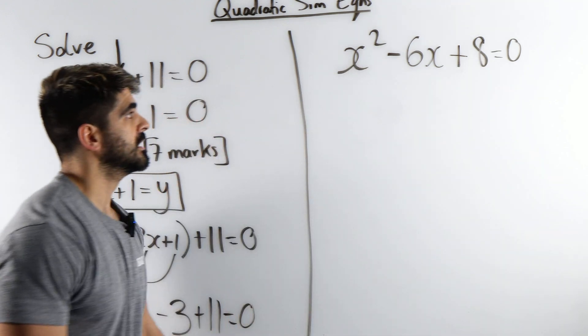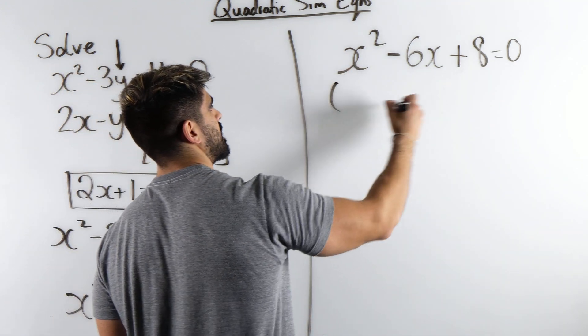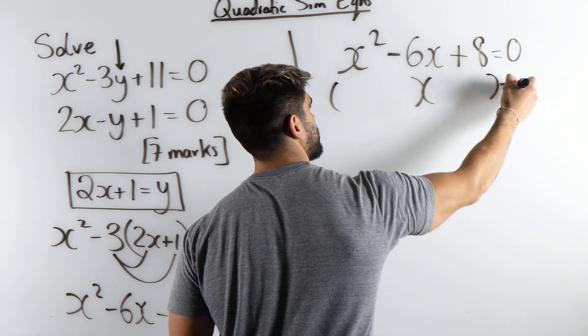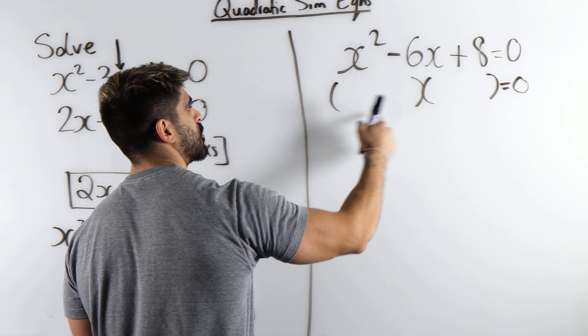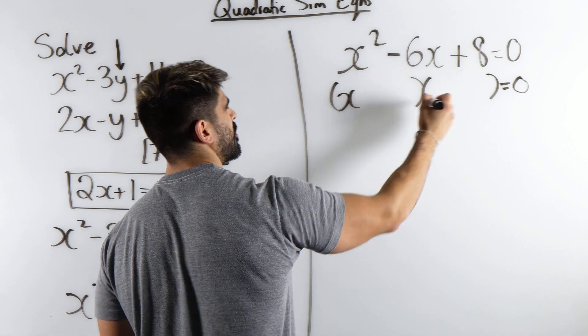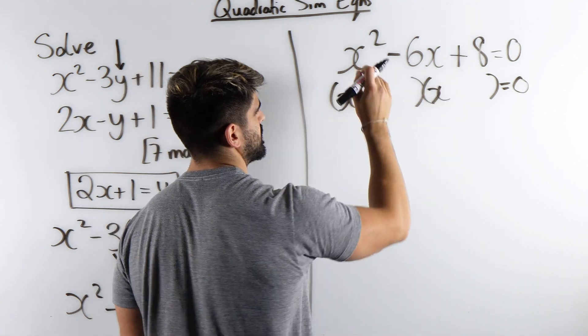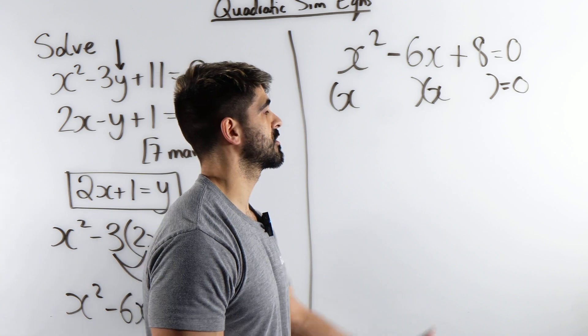Now we factorize that. So to factorize this, we're going to have two brackets. What multiplies to give you x squared? Well not necessarily multiply by itself, but what multiplies to give you x squared? It is just x and x.